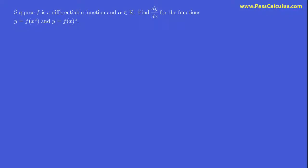Let's say we have a differentiable function f and we have some real number alpha. Let's make two different functions from those two pieces of data. First, f composed with x to the power of alpha, and then the other one, f of x to the power of alpha.